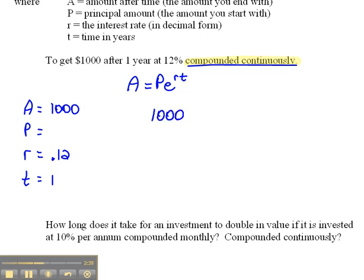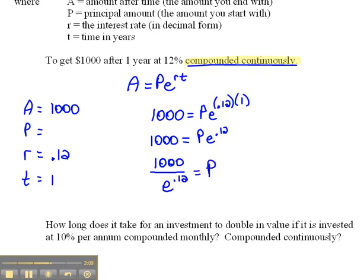So 1,000 in place of A will equal PE to the R, which is 0.12, times T, which is 1 power. Now simplifying as we go, that would be 1,000 equals PE to the 0.12 times 1 is 0.12. And now to get P alone, we'd have to divide both sides by E. So that would be 1,000 divided by E to the 0.12 equals P.